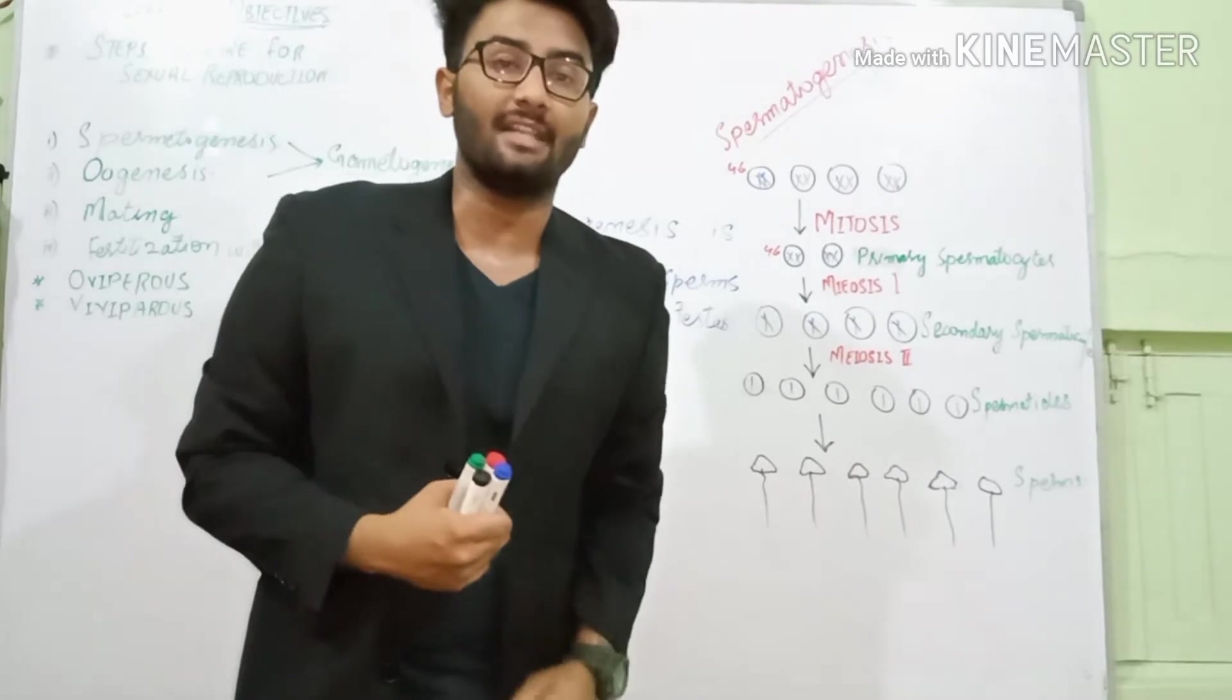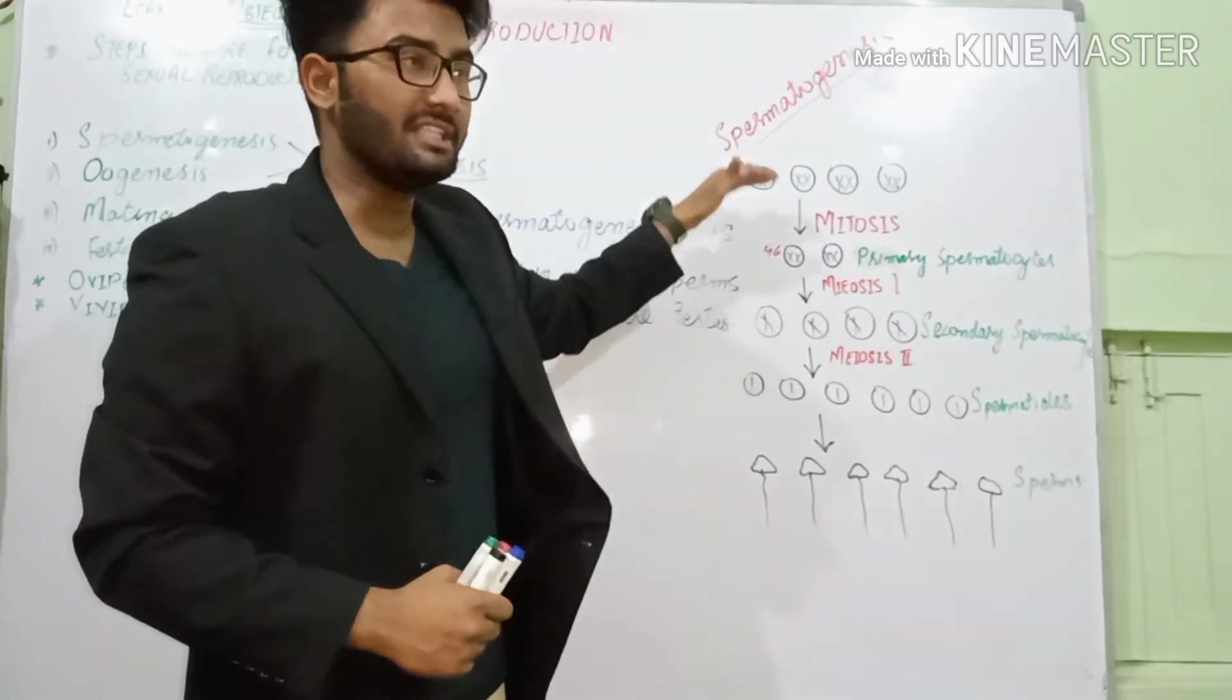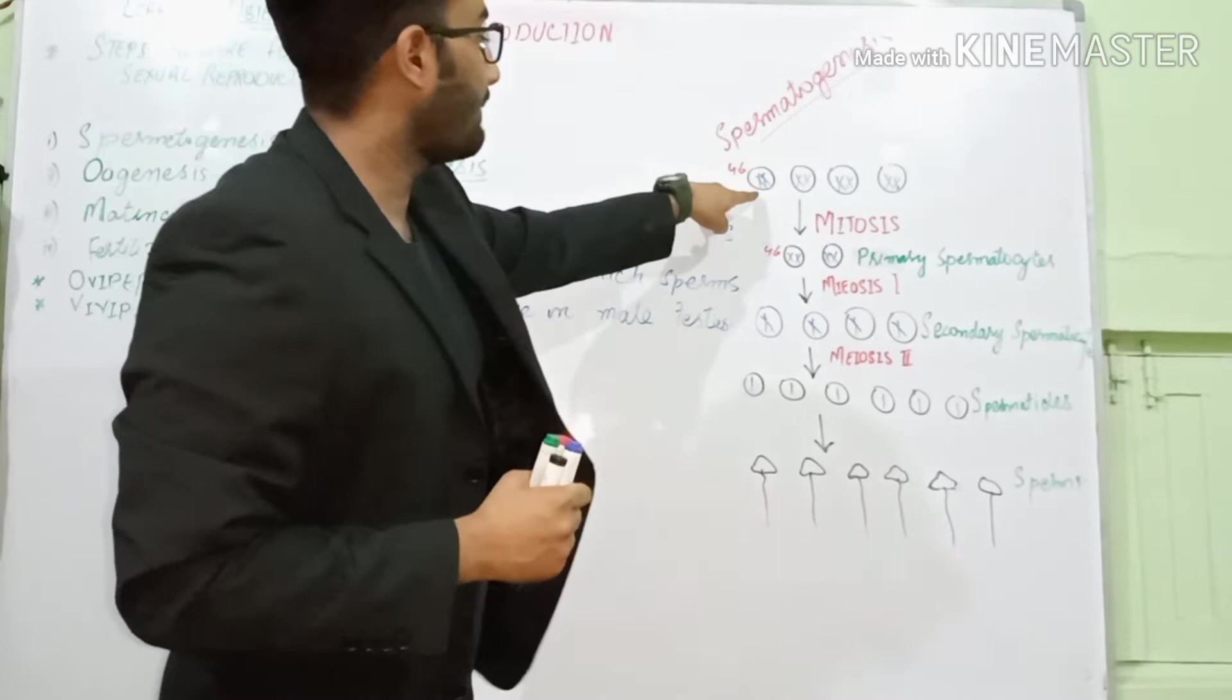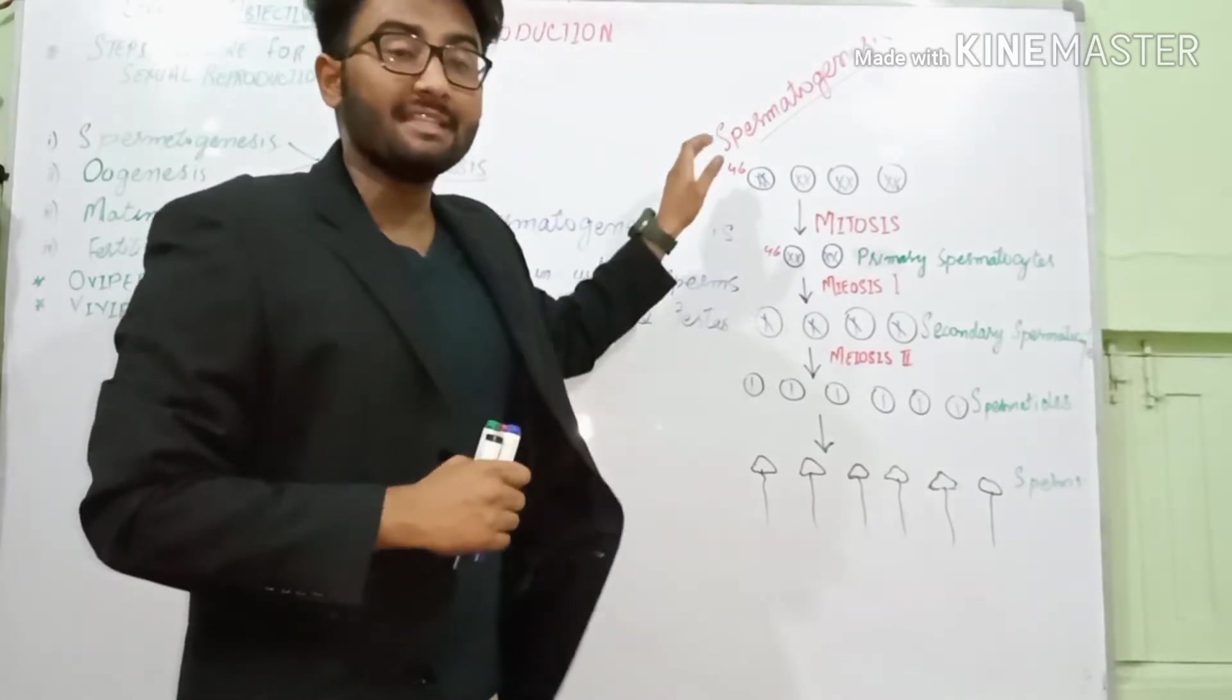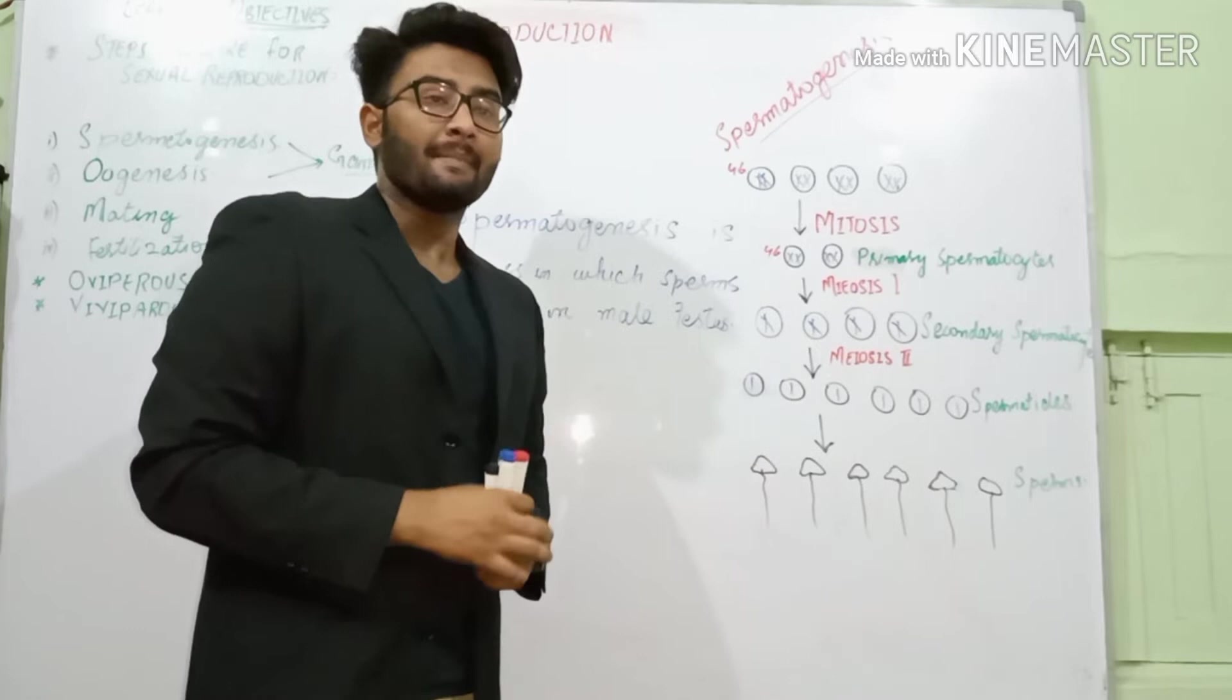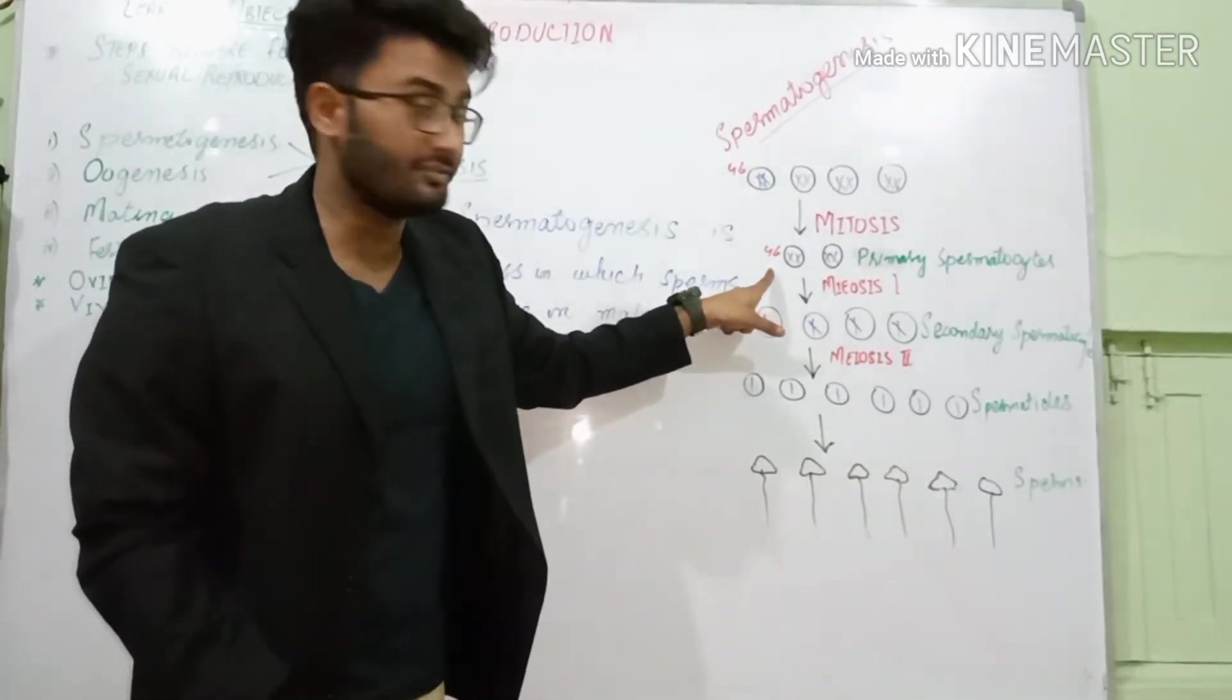Germ cells participate in this process. Germ cells are divided by mitosis. They are diploid in nature. What is mitosis? Mitosis is a type of division in which the parent cells are divided and the number of chromosomes are the same. Here is 46 number of chromosomes, here is 46 number of chromosomes.